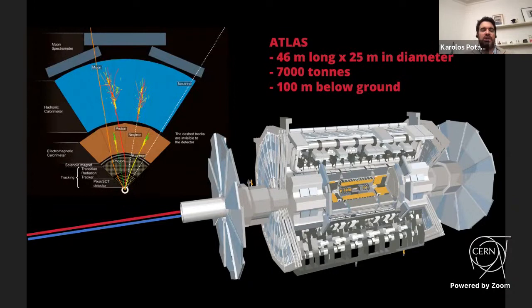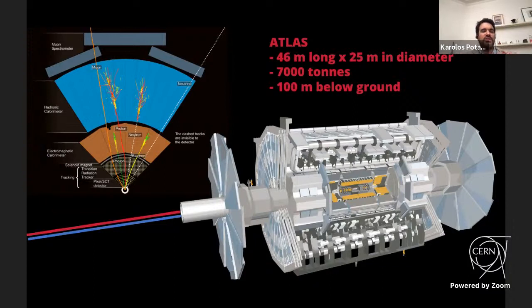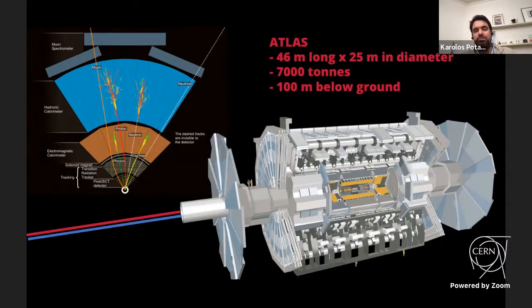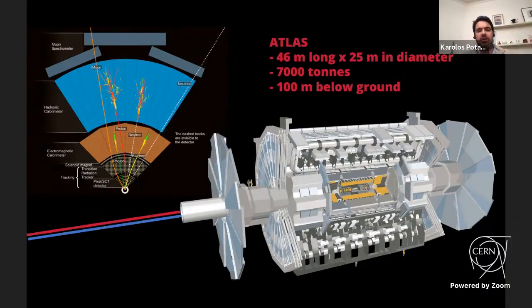ATLAS is a collection of multiple detectors. At the center is the tracker, which shows charged particle tracks such as electrons or protons. Then come the calorimeters, which collect particles and measure their energy. On the outside is the muon system, which detects muons — second-generation particles that look like electrons but don't interact much with ordinary matter, leaving the detector without being fully absorbed, though still leaving a detectable trace.